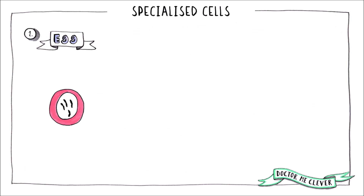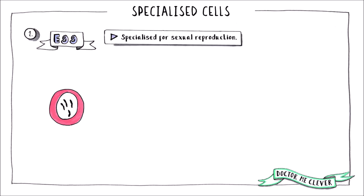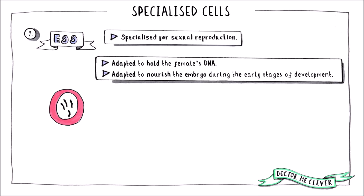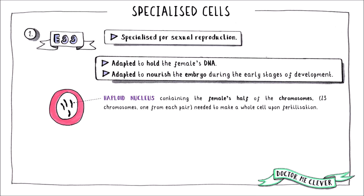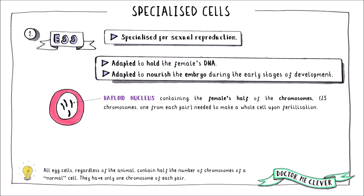The next cell you need to know about is the egg cell. This too is specialised for sexual reproduction, and it is adapted to hold the female's half of the DNA, to nourish the embryo after fertilisation and during the early stages of development. The egg has a haploid nucleus, like the sperm cell, containing half of the DNA required to make a whole cell upon fertilisation. Watch out for questions in your exam about a random animal's egg — you know that an egg contains half of the chromosomes present in a normal cell. The egg also has a nutrient-rich cytoplasm, which feeds and nourishes the developing embryo, ensuring that it can continue to grow.